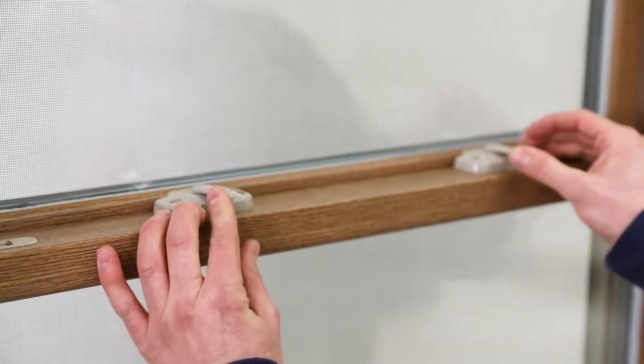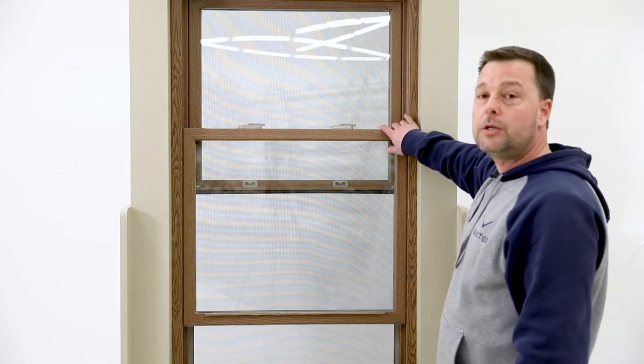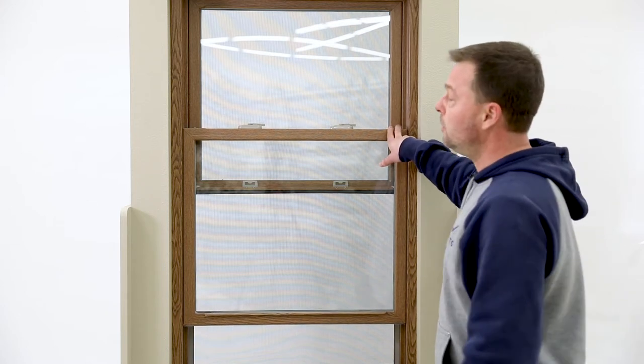Your first step is to unlock your window. After your window is unlocked, raise your lower sash 4 to 6 inches. Now if you look at the top of your lower sash, on either side there are tilt latches.